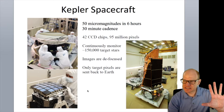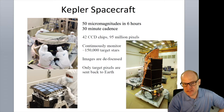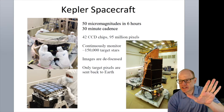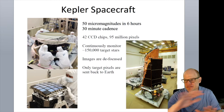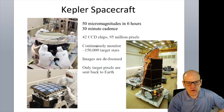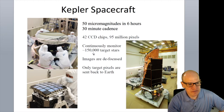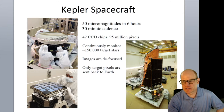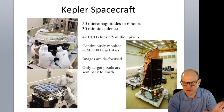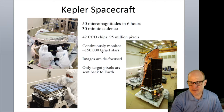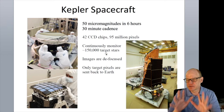As Kepler floats in space, it must be rotated so the solar panels point toward the Sun. Every three months it rotates 90 degrees, so over a year it completes four rotations. When observing a given star, the camera rotates so the same star falls on a different pixel or different part of the camera with each rotation.